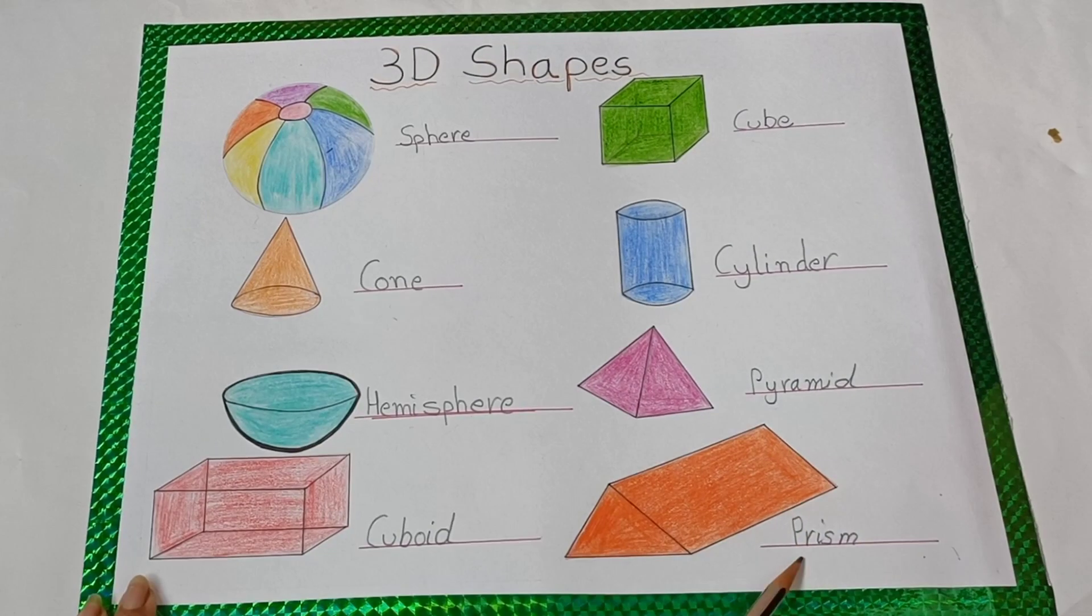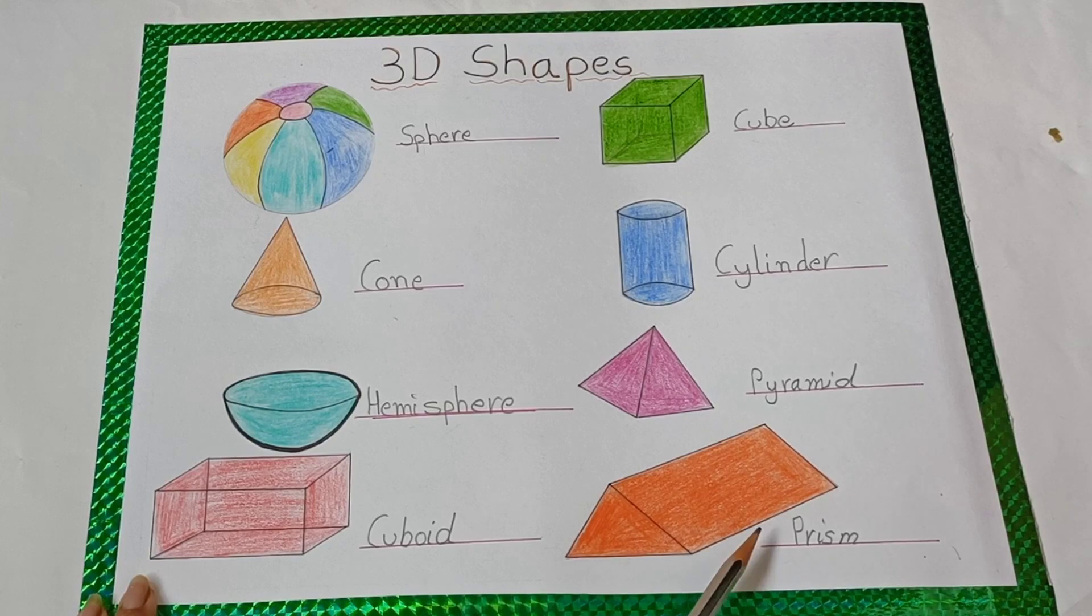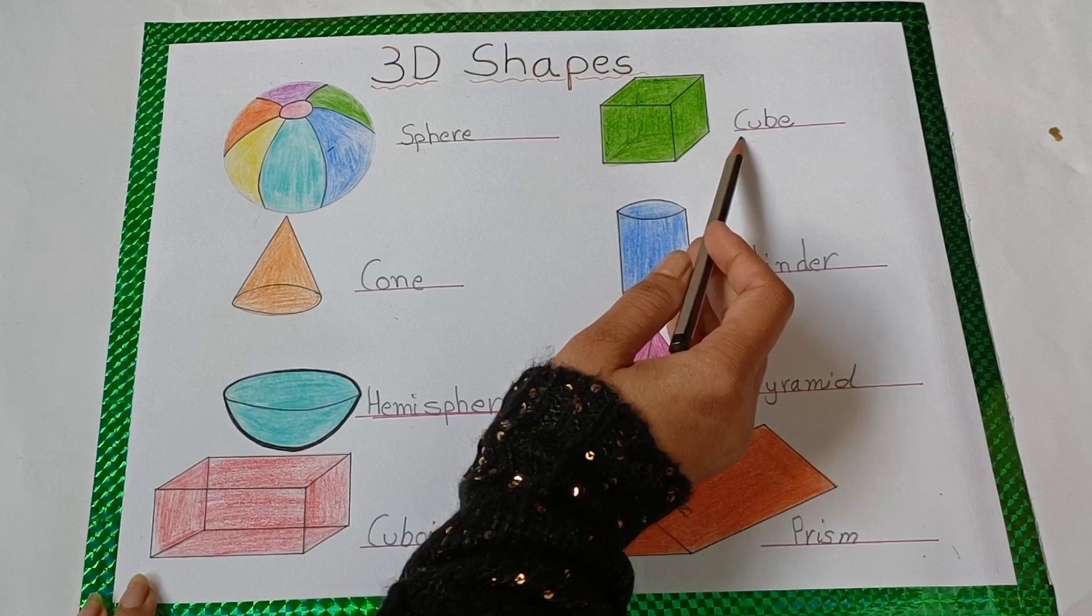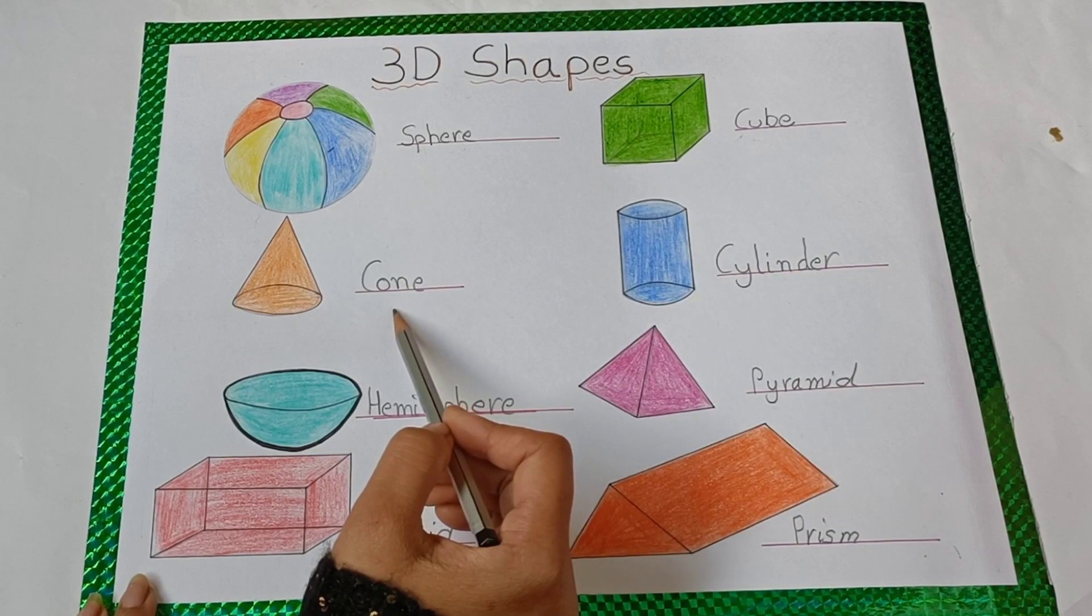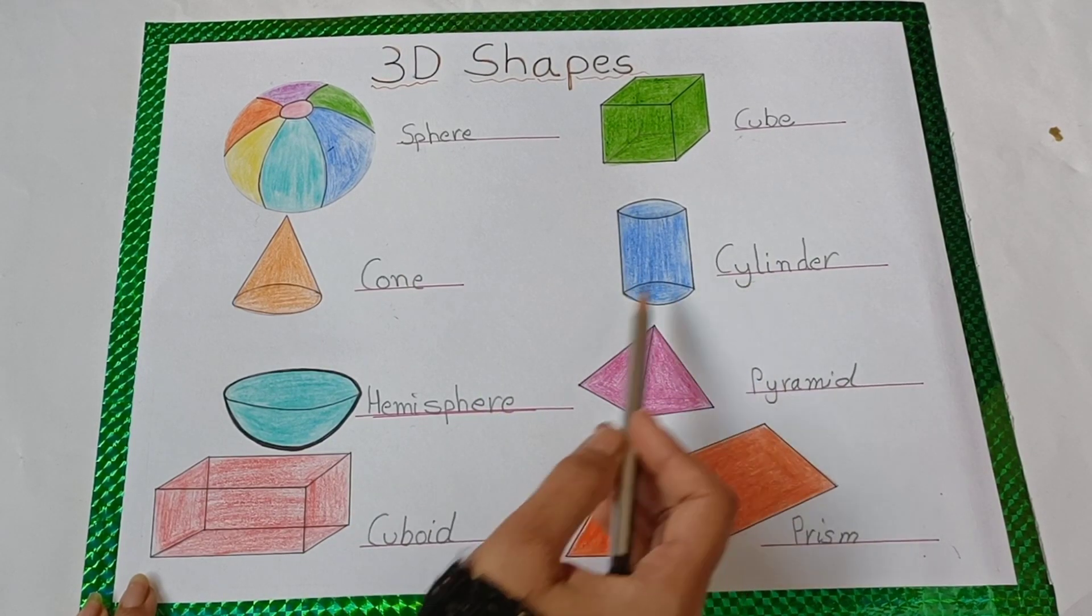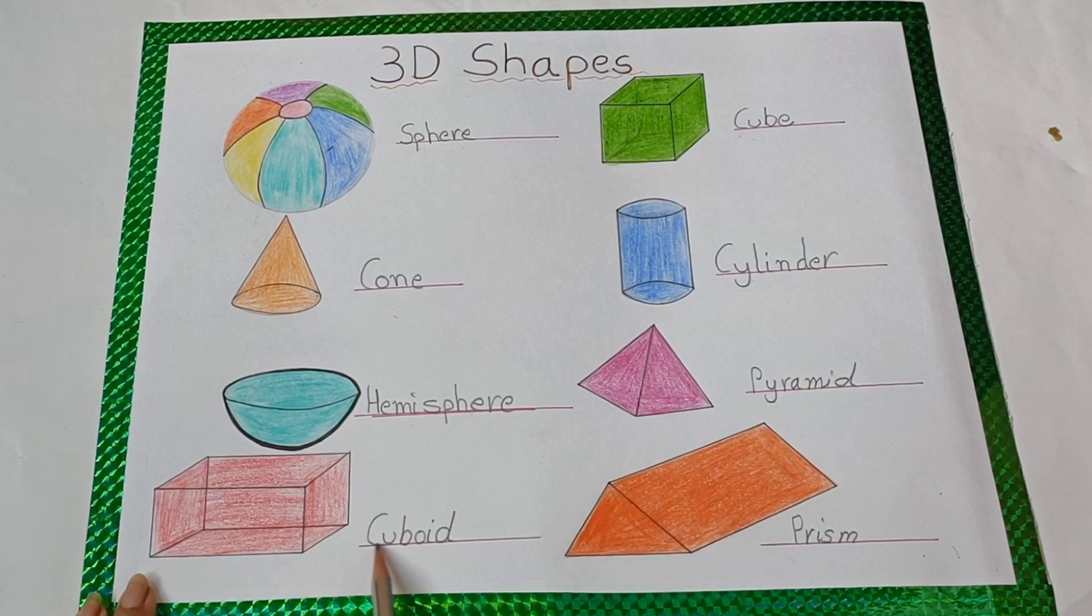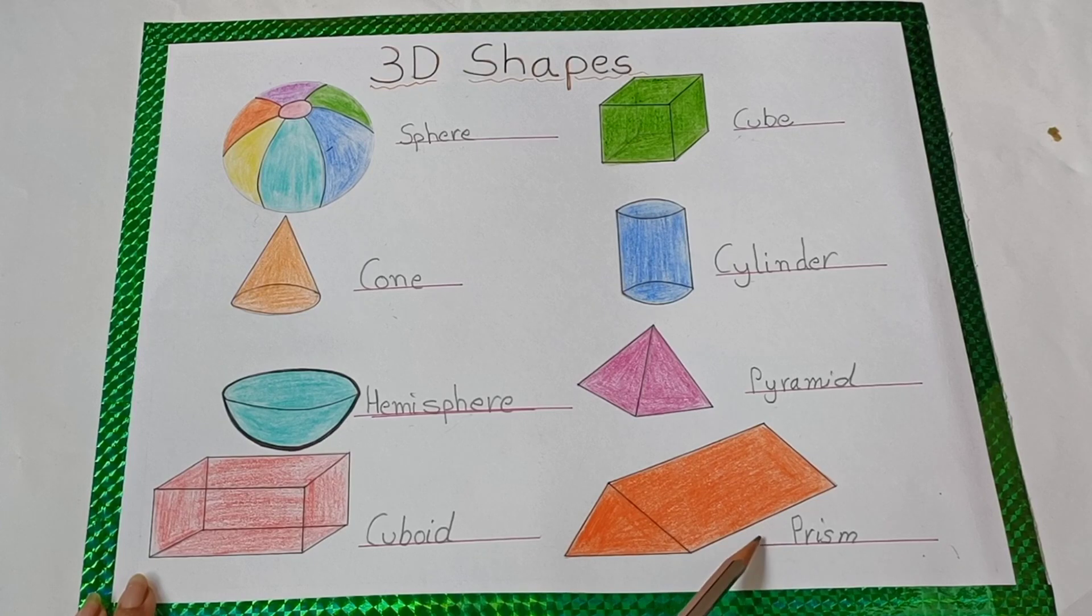Now children, let's quickly revise the 3D shapes. Sphere. Cube. Cone. Cylinder. Hemisphere. Pyramid. Cuboid. Prism.